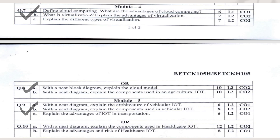The all-choice in Module 5 is: with a neat diagram, explain the components used in healthcare IoT, and the advantages and risks of healthcare IoT. Complete healthcare IoT is covered across two questions consisting of 12 and 8 marks, totally 20 marks.